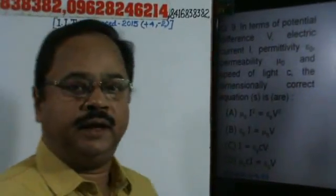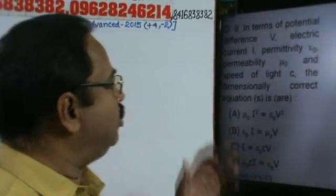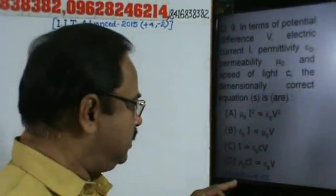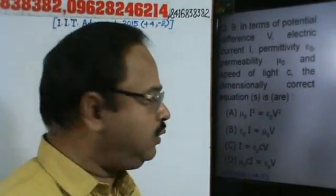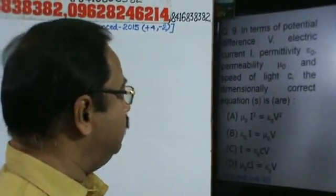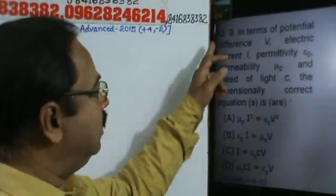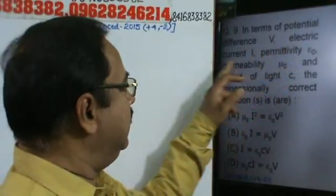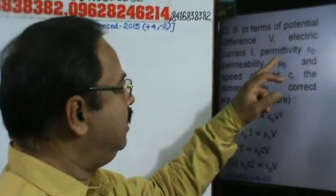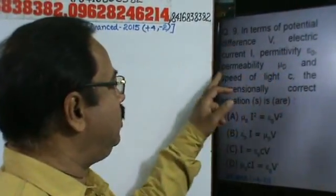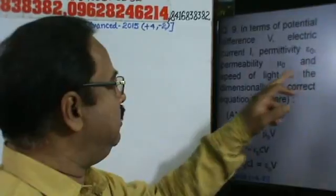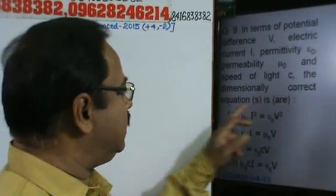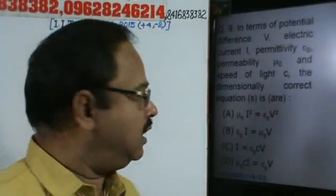Next problem. This is a more than one correct option question, and the marking scheme is plus 4 minus 2 — plus 4 for correct and minus 2 for wrong option. The question asks: in terms of potential difference V, electric current I, permittivity epsilon naught, permeability mu naught, and speed of light C, which is the dimensionally correct equation?